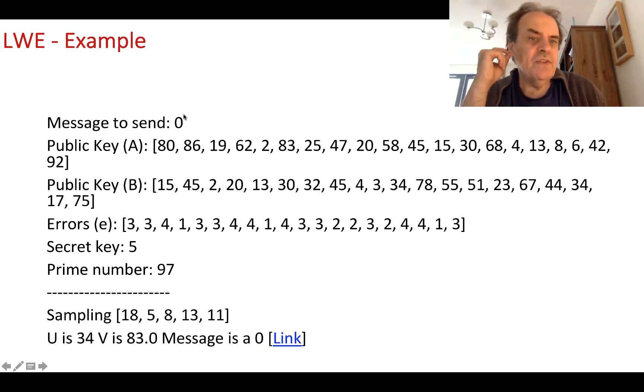Here's a sample run with a message of 0. We take samples and calculate the B value given the secret key and the errors. This is the public key. We can discard the errors and keep the private key while publicizing A, B, and that we used prime number 97. We sample at various places and get U and V values. From there, we work out the result and get the message is 0.